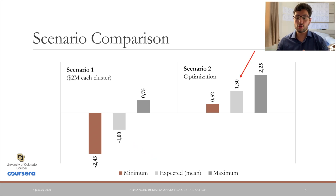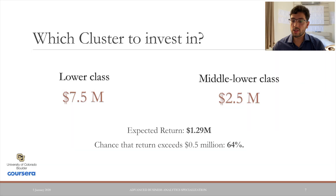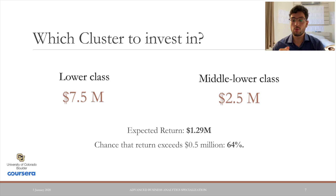On the other hand, scenario two, in which the optimization model was employed, led to a much more reasonable result of an expected return of $1.3 million. So, in which cluster to invest in? Only the clusters of lower and middle-lower classes were selected as good candidates by the model: cluster one with the amount of $7.5 million, and cluster two with the amount of $2.5 million.